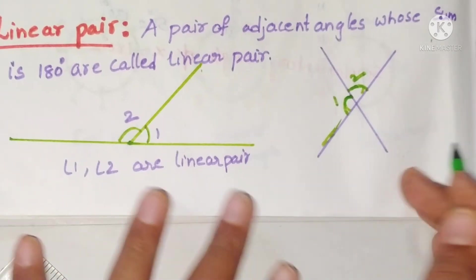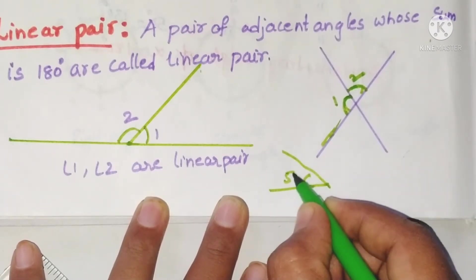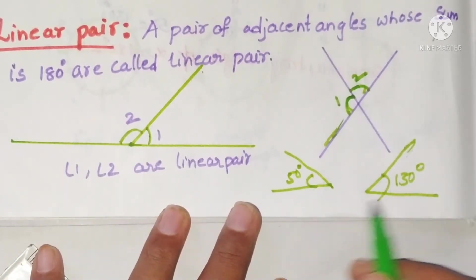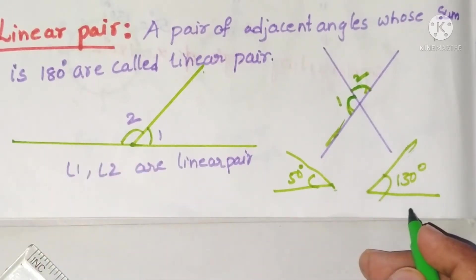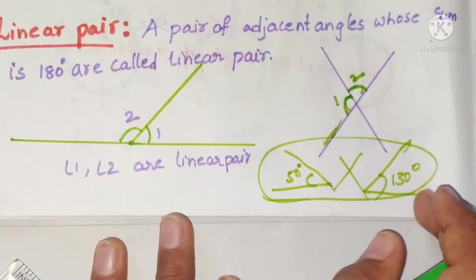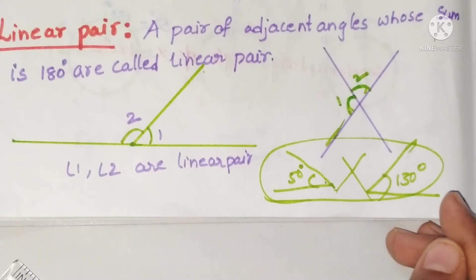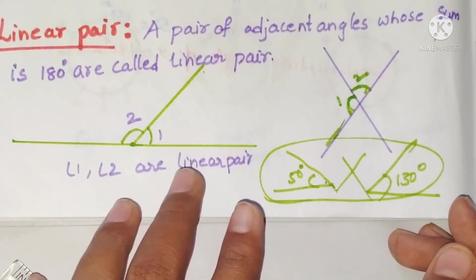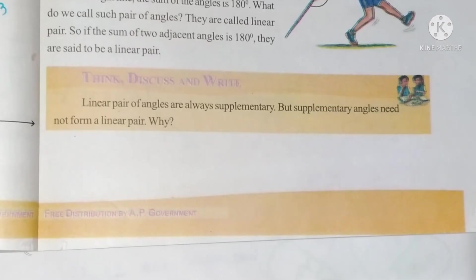So finally: a linear pair consists of adjacent angles whose sum is 180 degrees. For example, if I draw 50 degrees and 130 degrees, their sum is 180 — but can we say these are a linear pair? No, because these angles are not adjacent. They are supplementary, since their sum is 180, but they are not a linear pair.